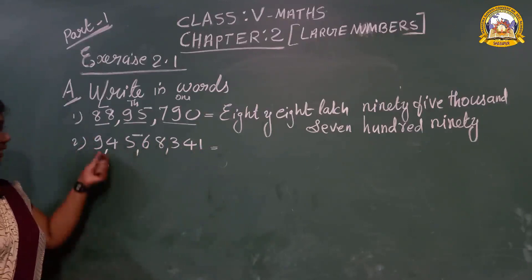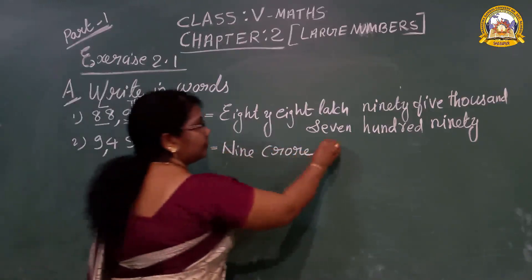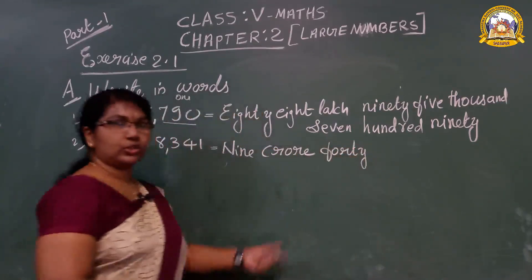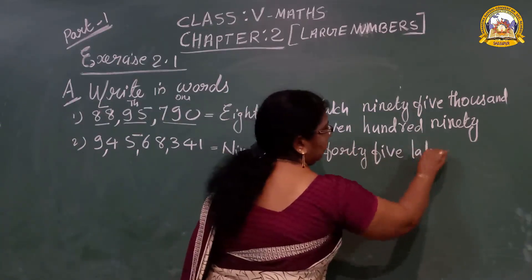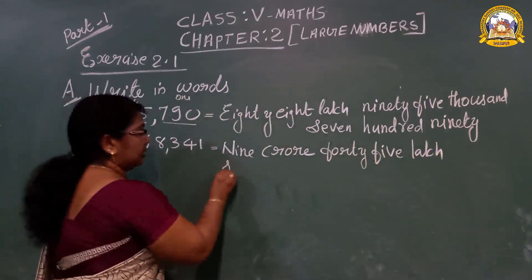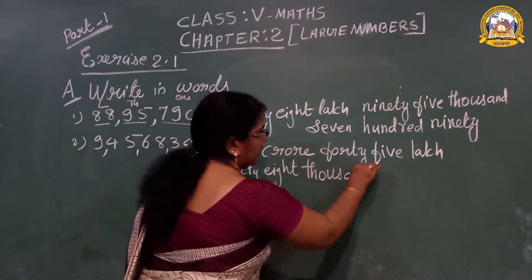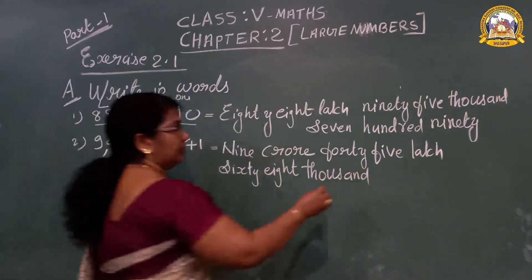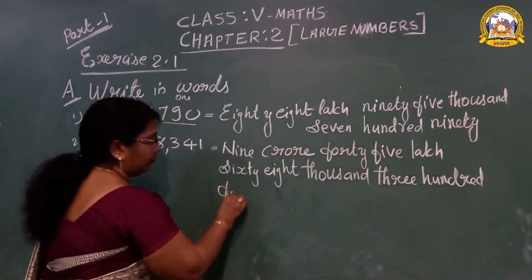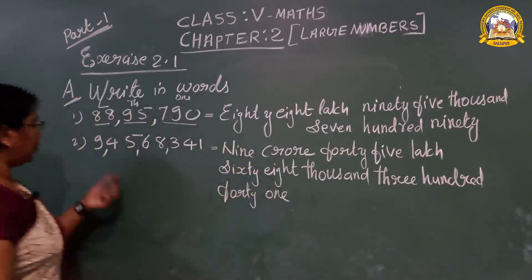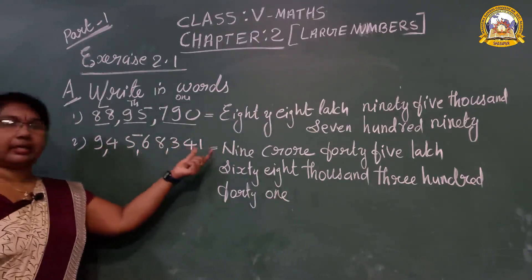What is the spelling of crore? C-R-O-R-E. Nine crores. Forty-five — don't get confused with forty spelling, there is no U: F-O-R-T-Y. Forty-five lakh. Sixty-eight thousand — T-H-O-U-S-A-N-D. Three hundred — forty spelling: F-O-R-T-Y. Three hundred forty-one. Answer: nine crores, forty-five lakh, sixty-eight thousand, three hundred forty-one.